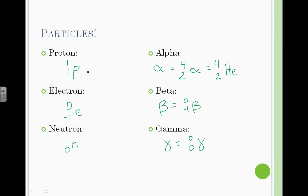So the particles involved in nuclear reactions. We have a proton with a mass of one. Of course, the number of protons or the charge of one. We have the electron with no mass and the charge of negative one. We have the neutron with a mass of one but no charge.